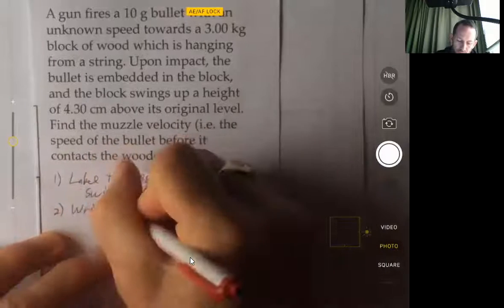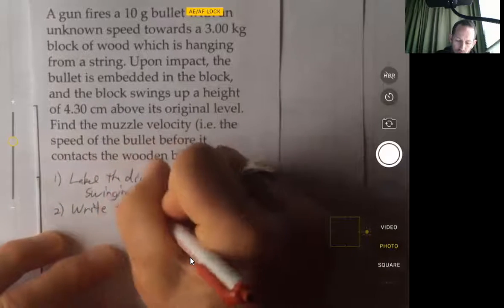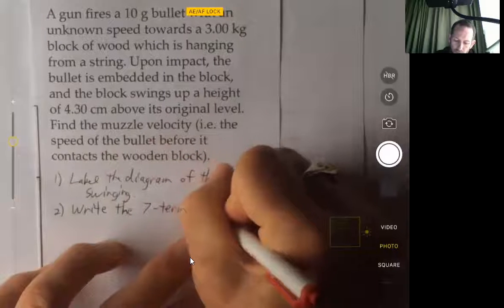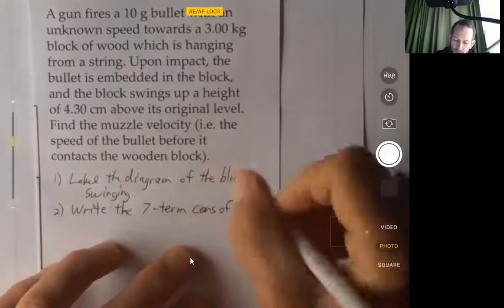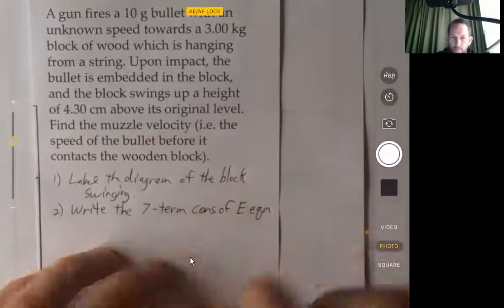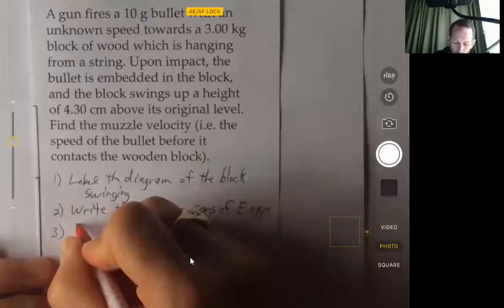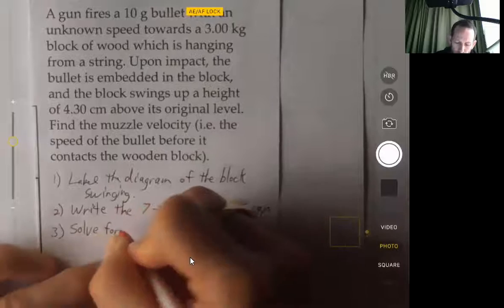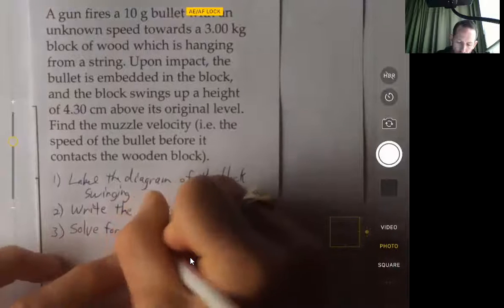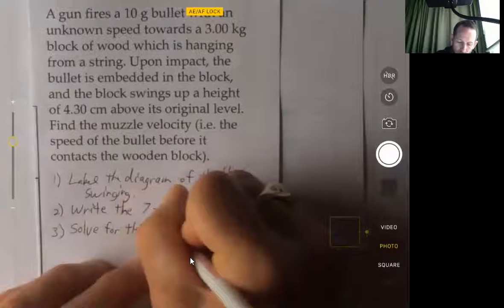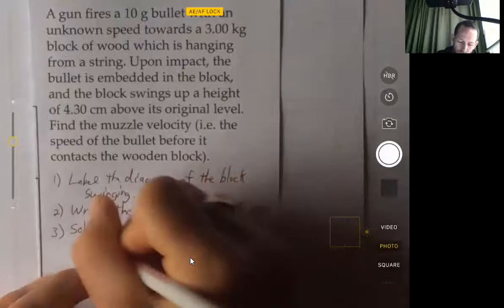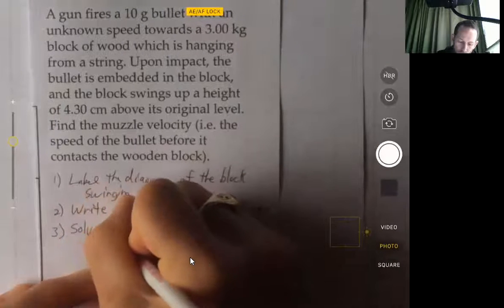We're going to write the seven term conservation of energy equation, and then we're going to use that to solve for the initial velocity of the bullet block system.